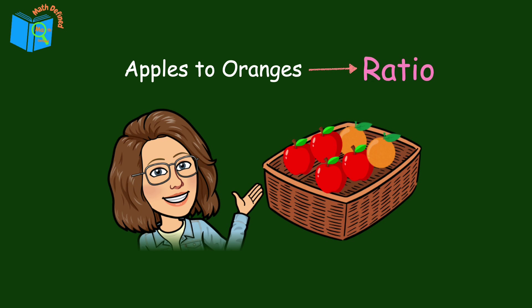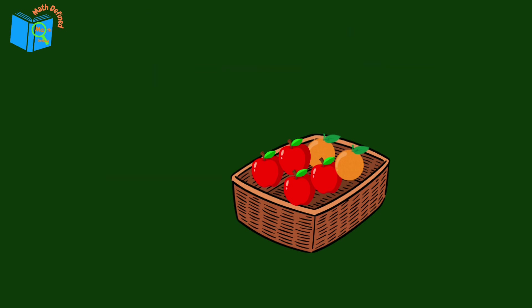Ratios are all around us, and they help us compare two quantities. Let's learn how to write and interpret them together. So what exactly is a ratio? A ratio is a way to compare two quantities using division. It tells us how much of one thing there is compared to another.